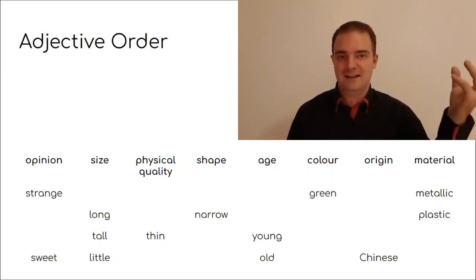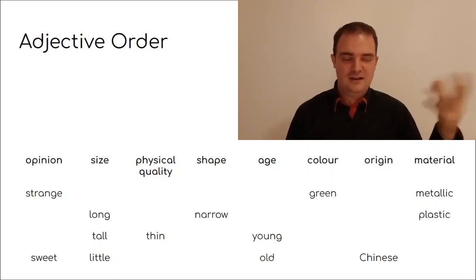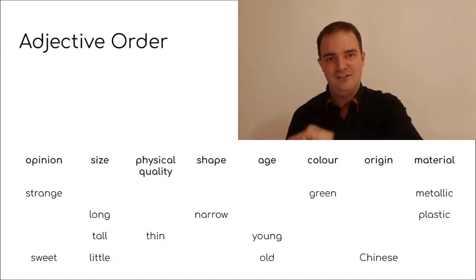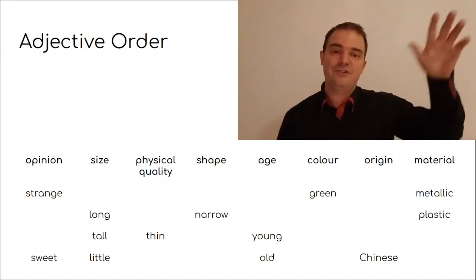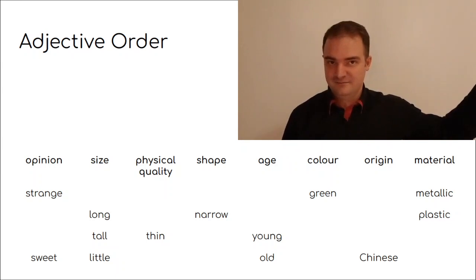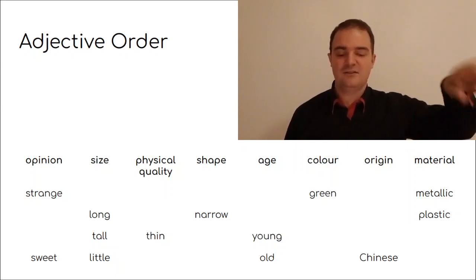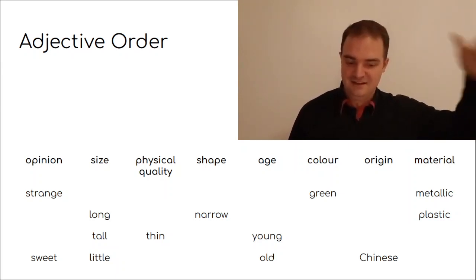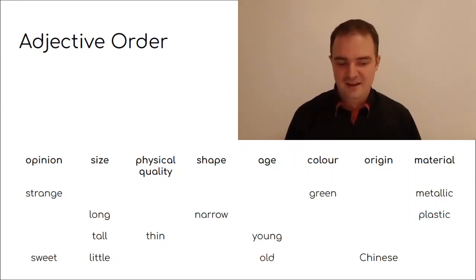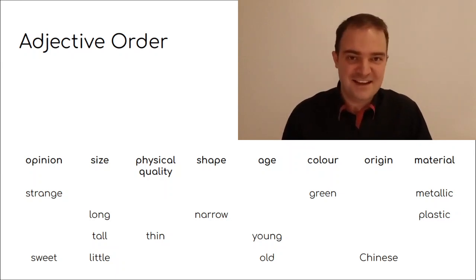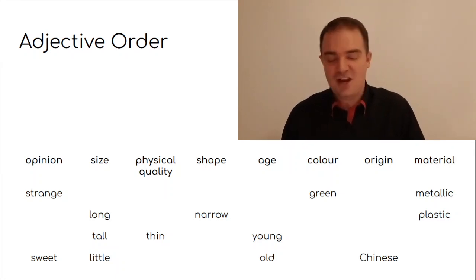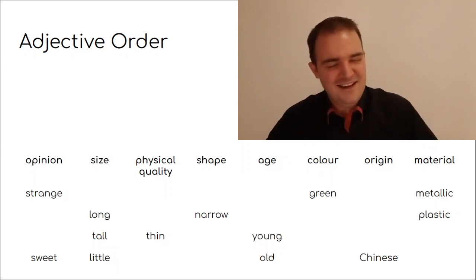A long narrow plastic thing. It can't be a narrow plastic long thing. A tall thin young man. It can't be a thin tall man. Can't be a young tall thin man. It's a tall thin young man. A sweet little old Chinese lady. It's not a Chinese old little sweet lady or an old little sweet Chinese lady. No, no. It's a sweet little old Chinese lady. Isn't that interesting?